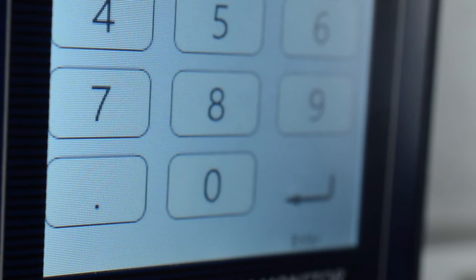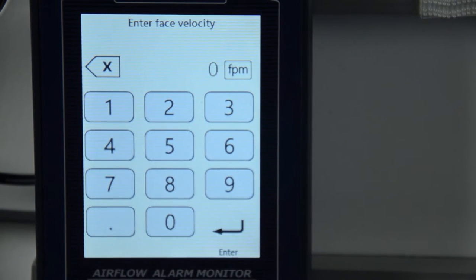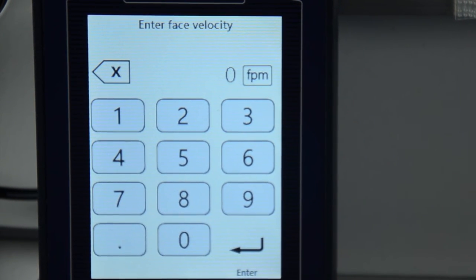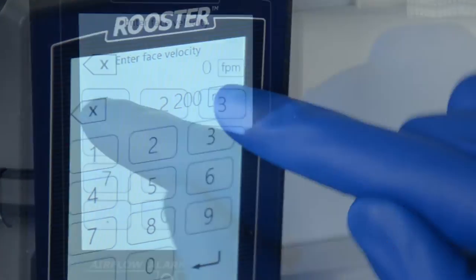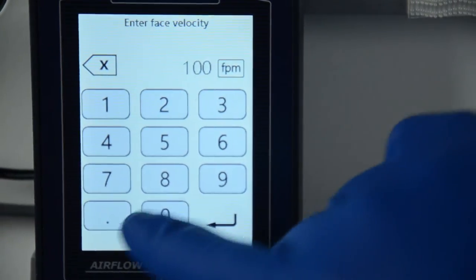At this point, you will need to enter the nominal phase velocity value for the sash high position. You can toggle units by simply pushing the FPM or M/S button in the upper right corner of the keypad.